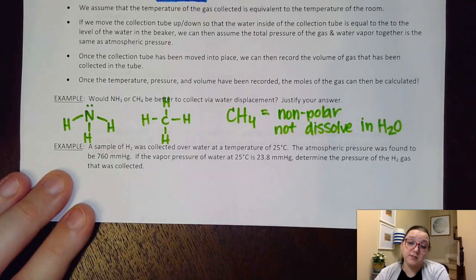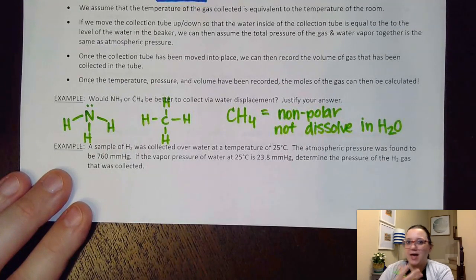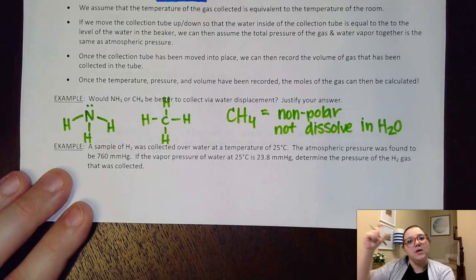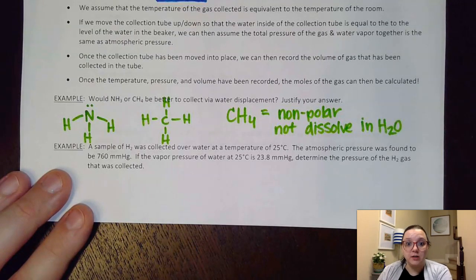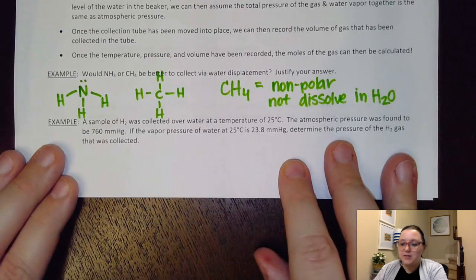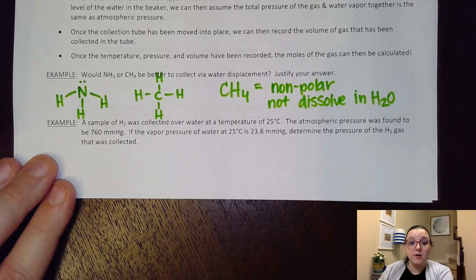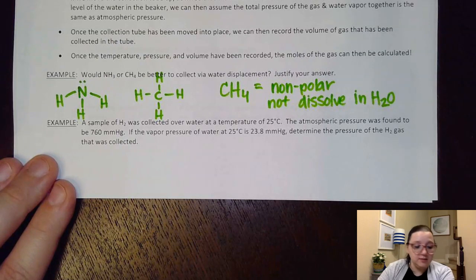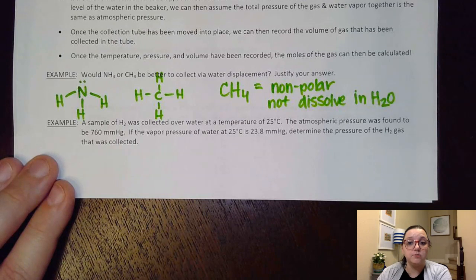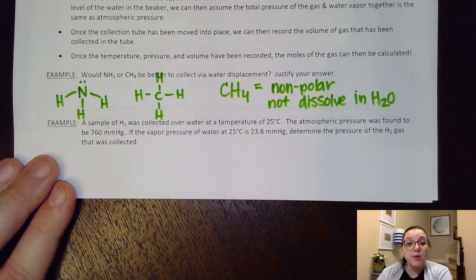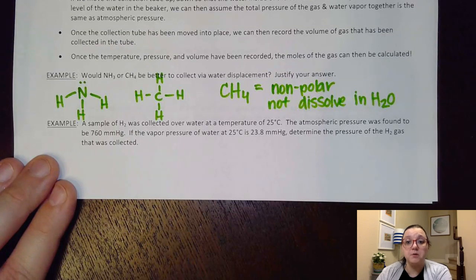Unfortunately, that ammonia would dissolve in the water. And so if it's dissolving in the water, it wouldn't collect in the top of your collection tube. All right, here's another problem. It says a sample of H2 was collected over water at a temperature of 25 degrees Celsius. The atmospheric pressure was found to be 760 millimeters of mercury. If the vapor pressure of water at 25 degrees Celsius is 23.8 millimeters of mercury, determine the pressure of the hydrogen gas.